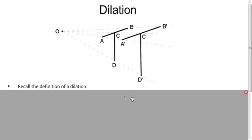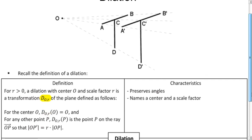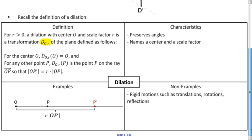Let's do a little refresher. Here's an example of one — how would you define a dilation? So here's a fair model for the word dilation: it has a center of dilation and a scale factor, and to use function notation we can use a capital D.